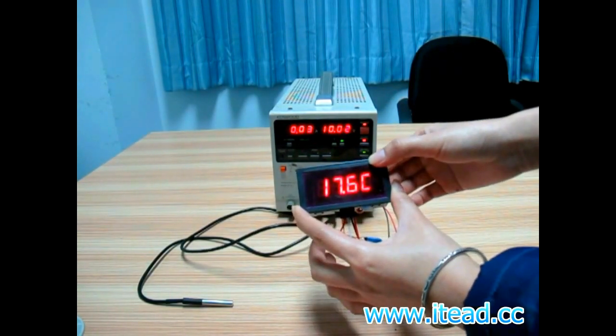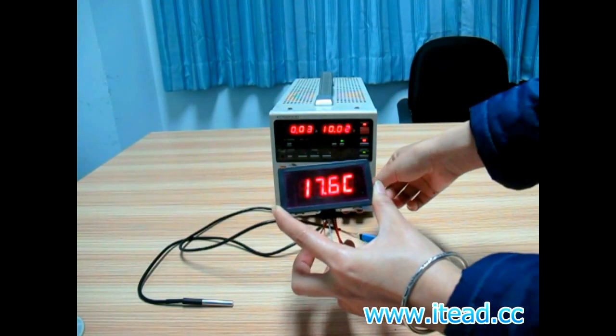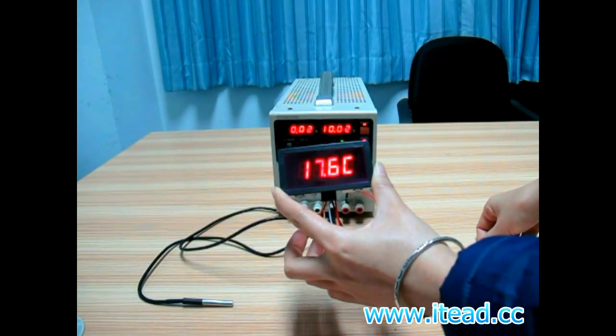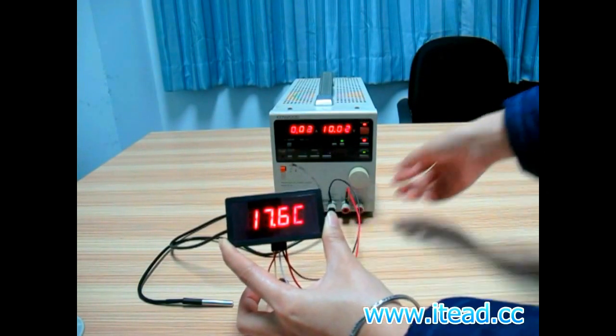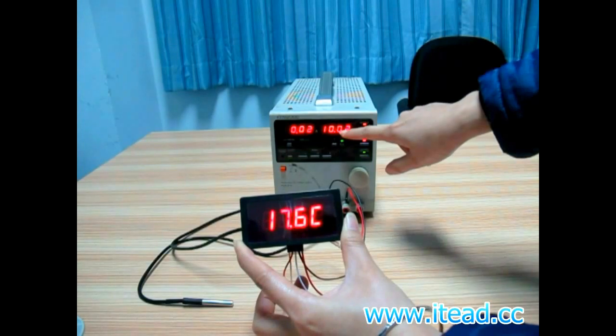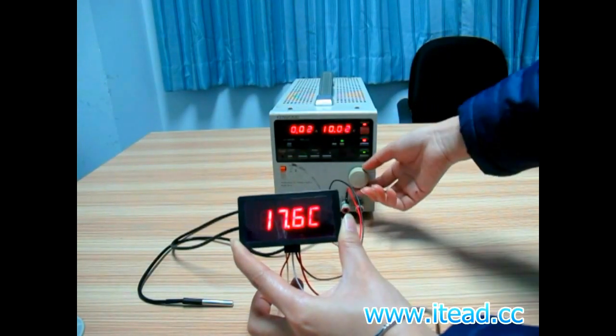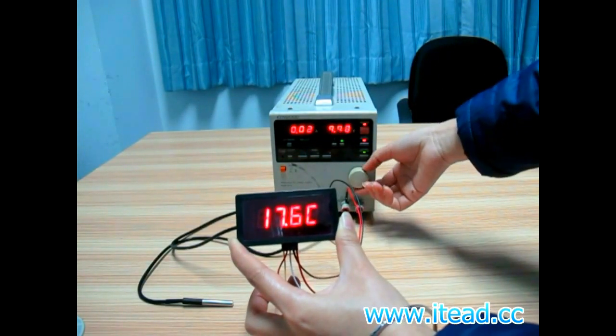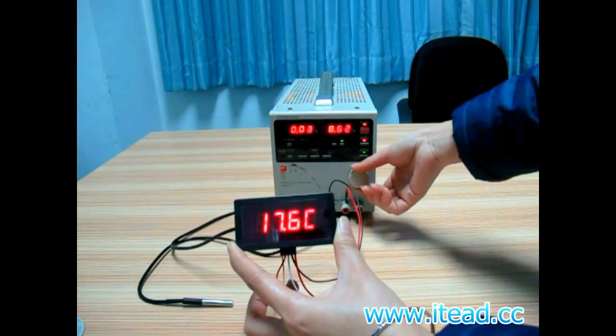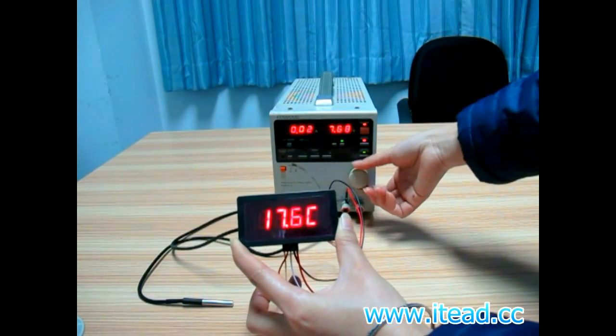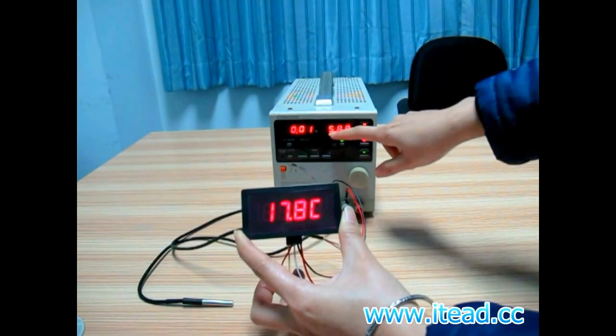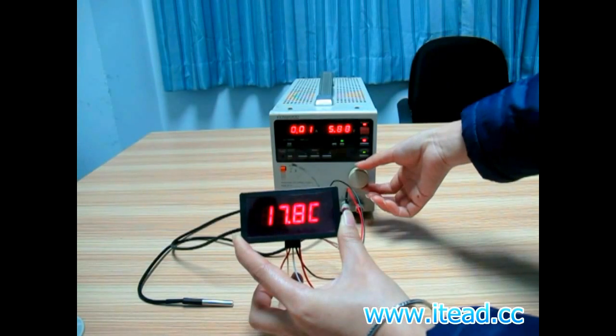It supports voltage from 8V to 24V, so I want to adjust the voltage. Here now it is 10.2V. I'm going to turn it down. Now here is 5.88V.